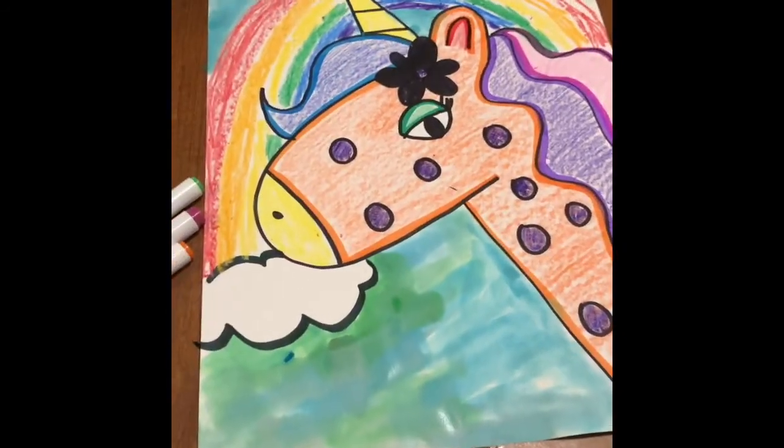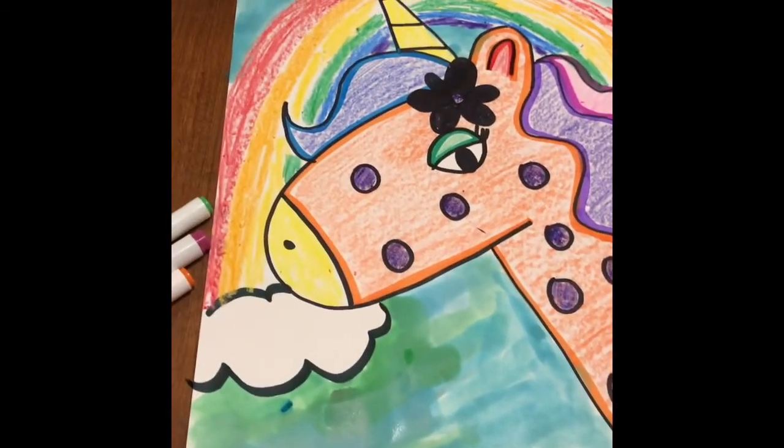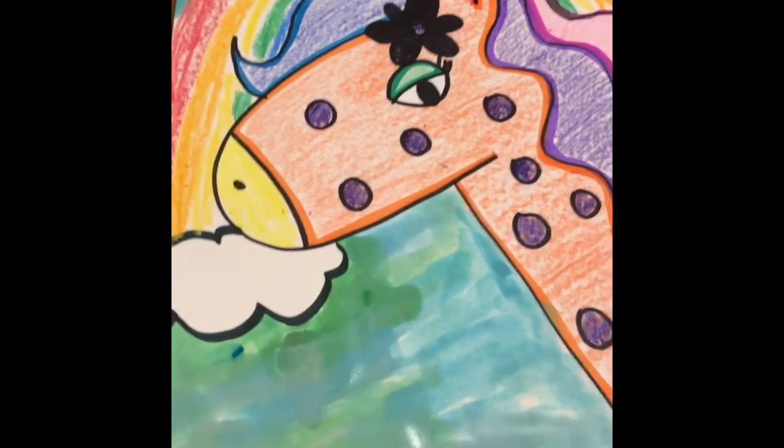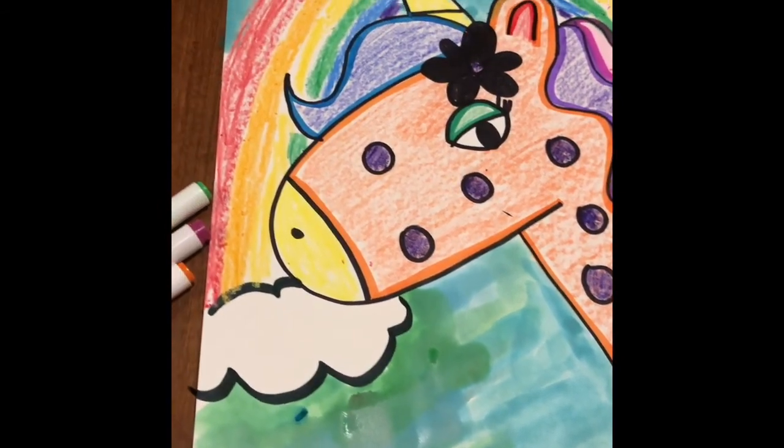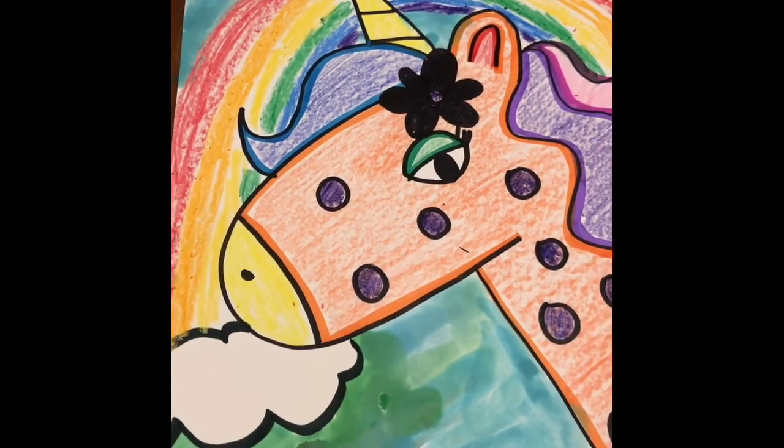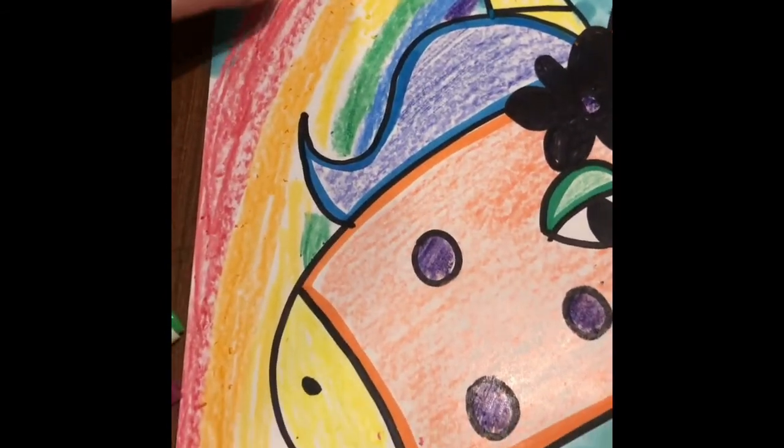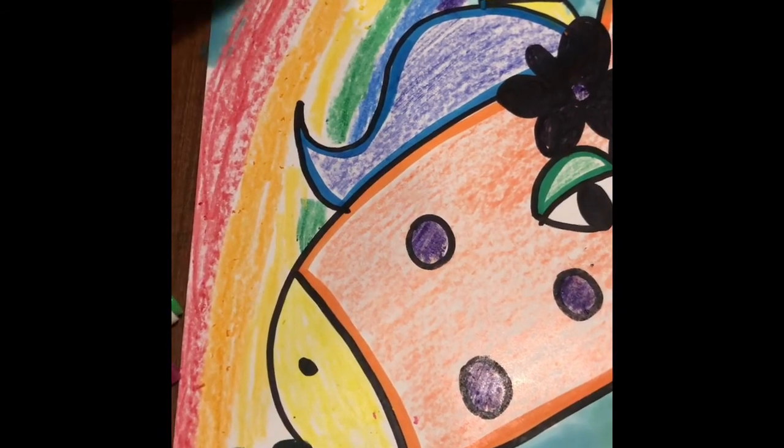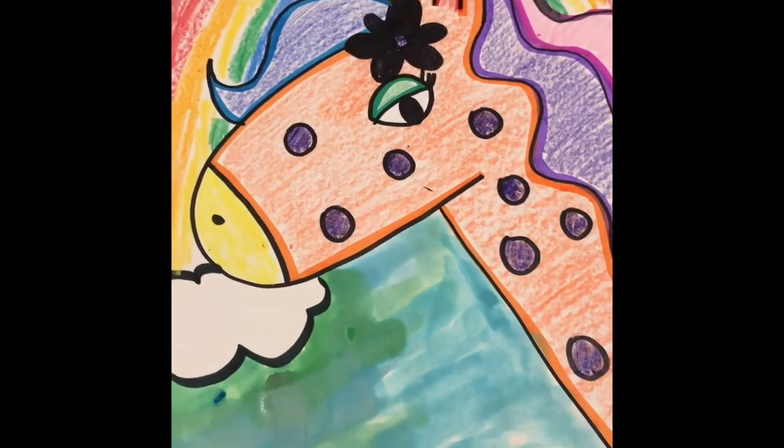All right so here is my finished product. I added some polka dots and some colors. I added a rainbow and then I even added some watercolor in my background. If you didn't know that crayon works just like oil pastel and it resists that watercolor. So whenever I was painting my watercolor up here that just pushed that paint away.